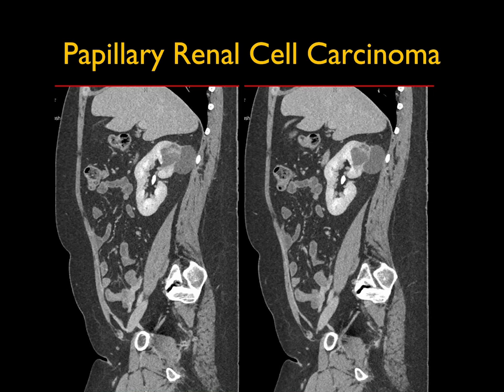On the sagittal view you can see a lesion with thickened and irregular septations — very cystic, but you have to worry. A cystic renal lesion with thickened or irregular septations is concerning for cystic renal cell carcinoma. A simple cyst can look like this but is less common, and you have to prove you're not dealing with a neoplasm. This would have been a Bosniak 3 — and it turned out to be a papillary renal cell carcinoma.